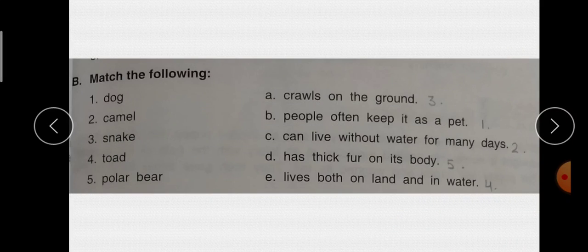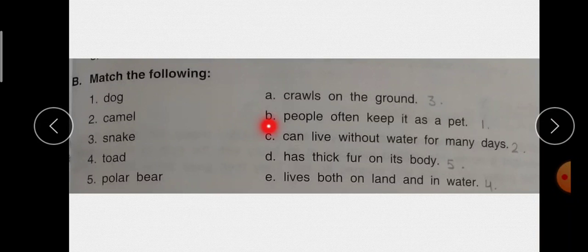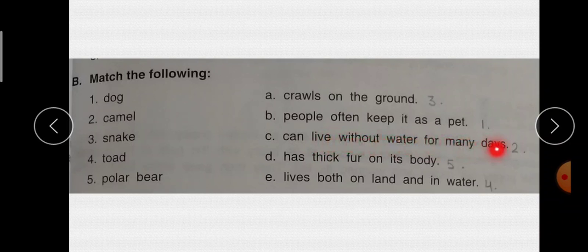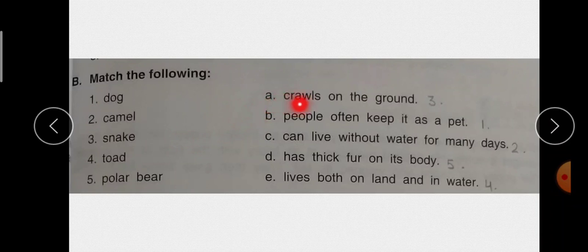Next है B part match the following. First है dog. Dog को हम B part के साथ match करेंगे. People often keep it as a pet. Second है camel. C part के साथ match करेंगे. Can live without water for many days. Third है snake. A part के साथ match करेंगे. Crows on the ground.